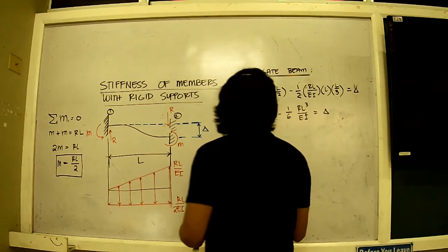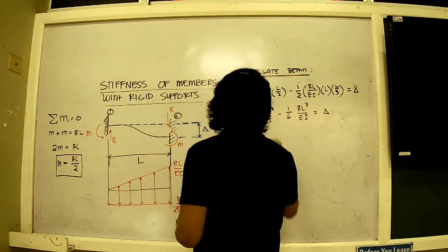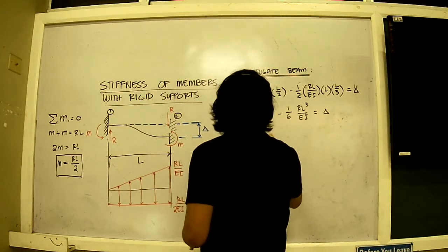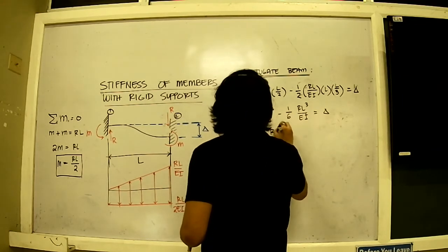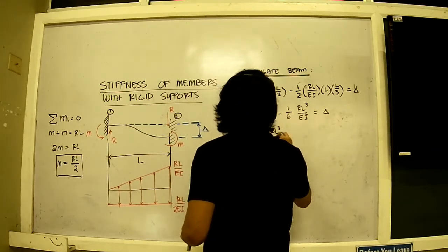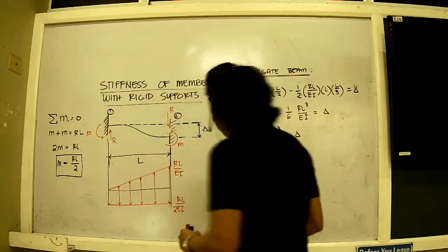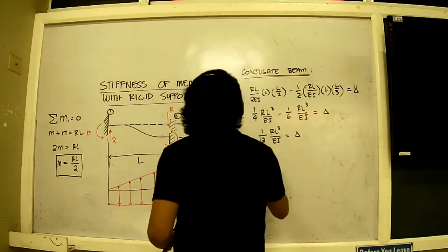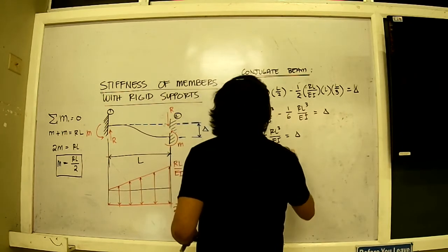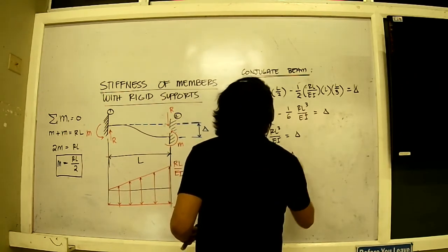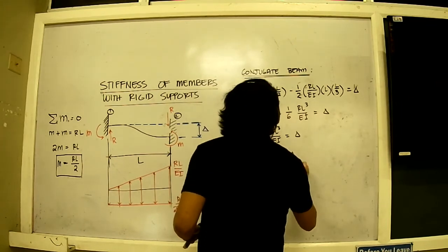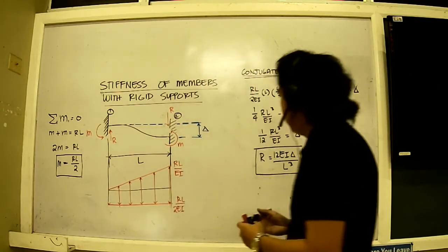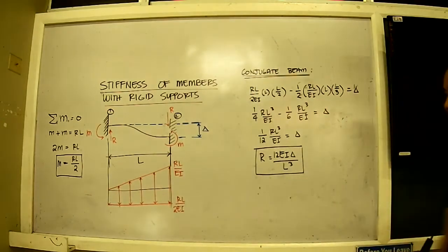Now solving for this, I will have one-fourth minus one-sixth. That should be equal to one over 12. RL cubed over EI is equal to delta. Now simplifying this, I will have that R is equal to 12EI delta divided by L cubed. So I have an expression for R.